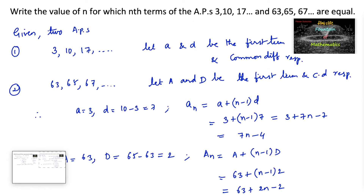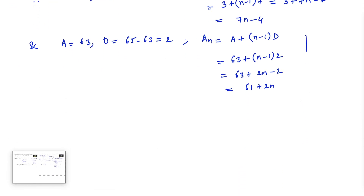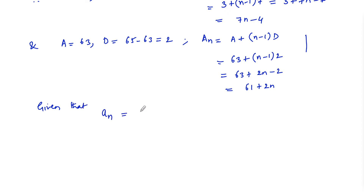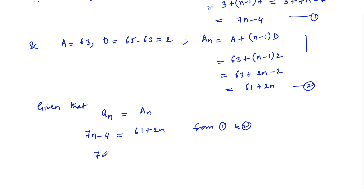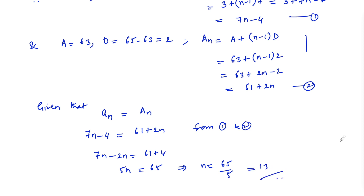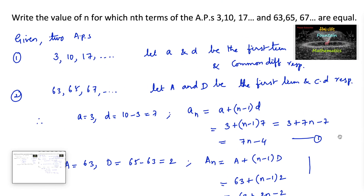Now we need to find the value of n for which the nth terms of the two APs are equal. Setting them equal: 7n − 4 = 61 + 2n. Rearranging: 7n − 2n = 61 + 4, so 5n = 65, which gives n = 65 ÷ 5 = 13. Therefore, the 13th terms of the two APs are equal.